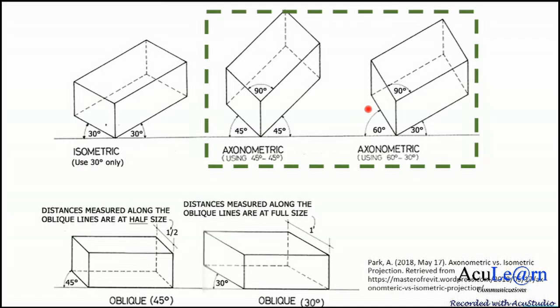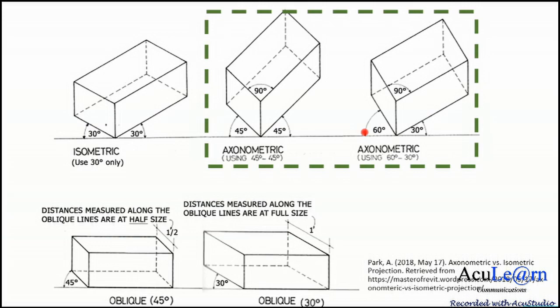And the other axonometric would be 60-30 or 30-60, where you can see there's a difference, an unequal degree to the reference line here. So what we're going to do, I'm going to demonstrate both of these. Very simple. It's not as complicated as it seems.